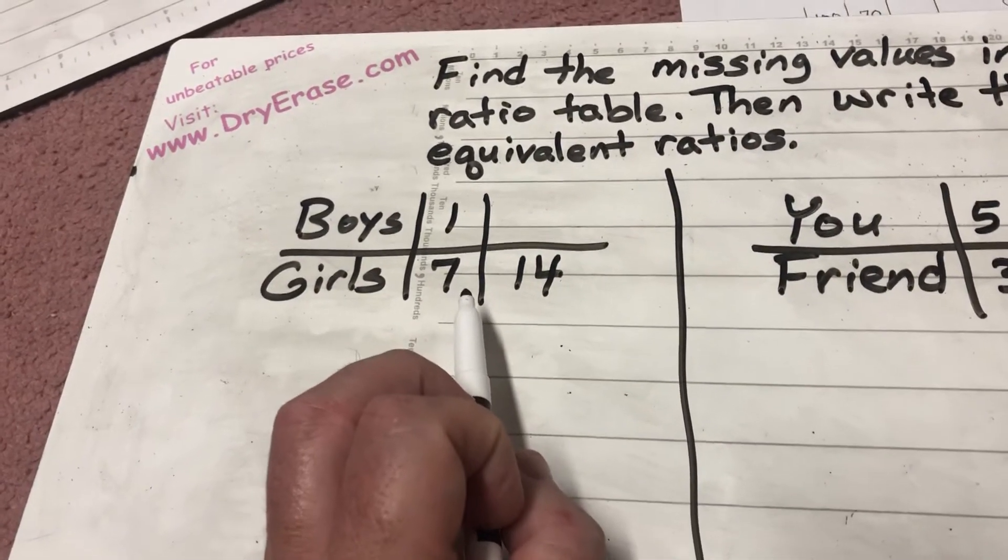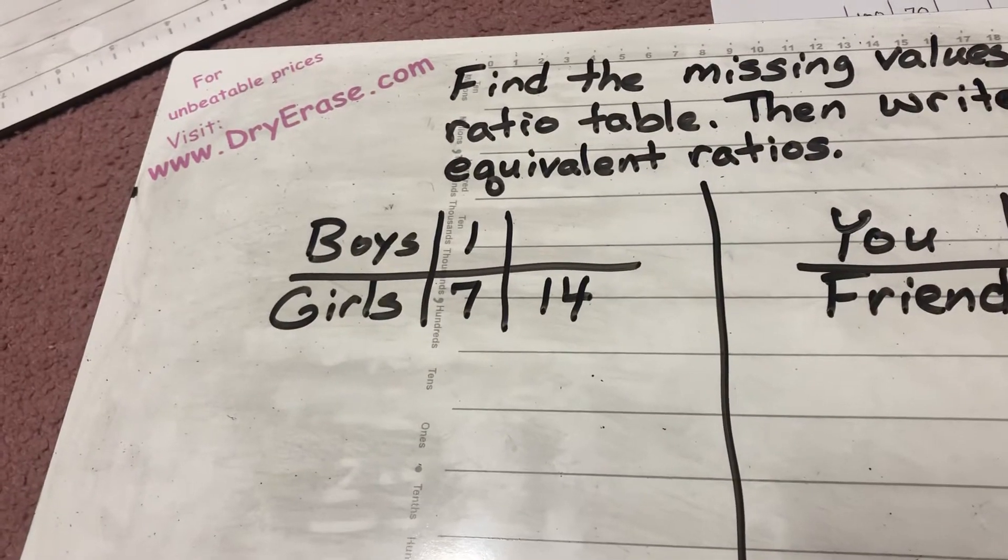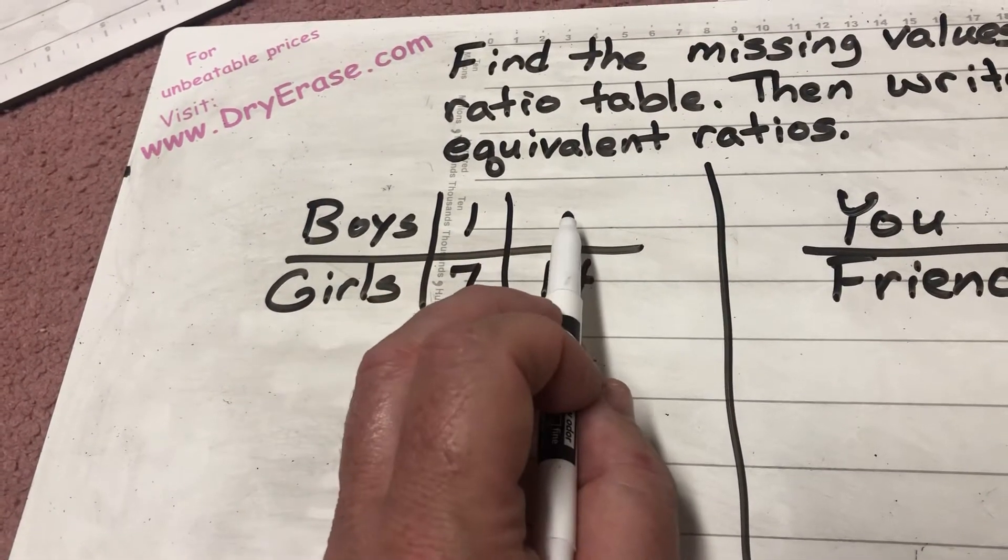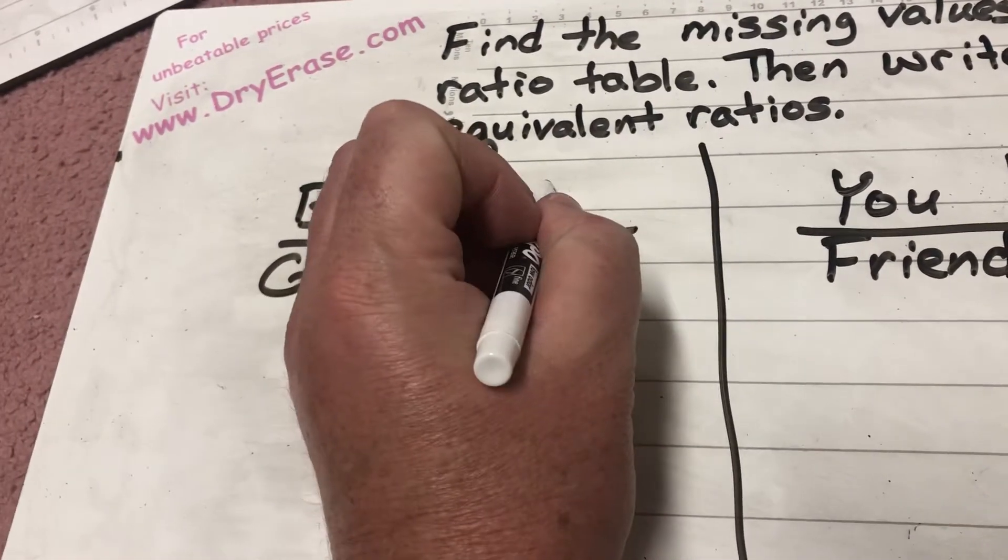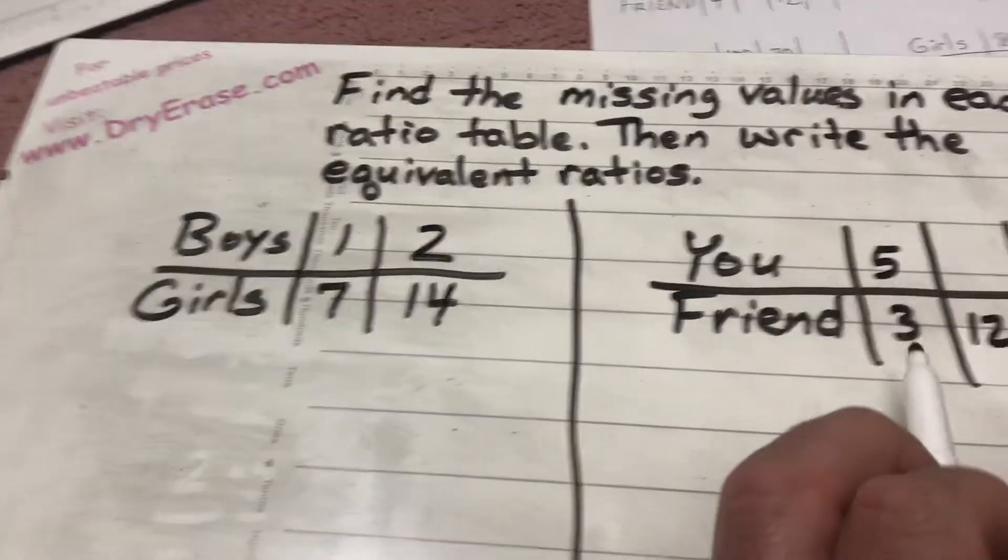Well, I should know as a 6th grader that they did 7 times 2 to get 14. So I've got to do 1 times 2 to get this number here. And sure enough, that's going to be 2.